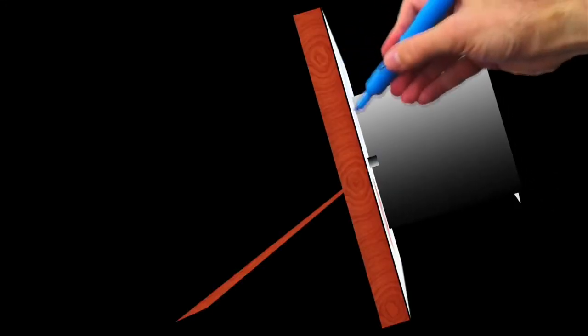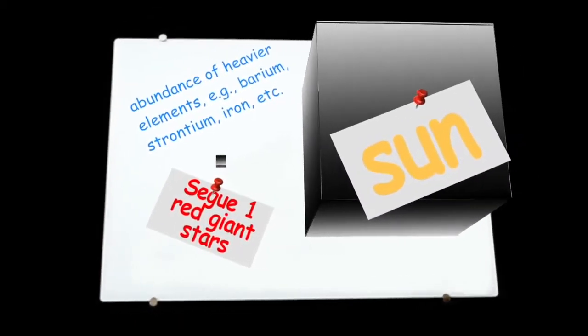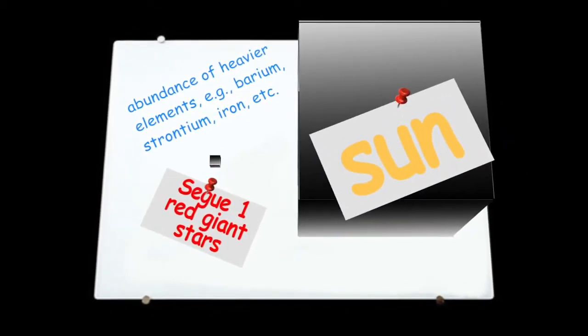Three of the seven red giant stars in Segway 1 are bright enough for scientists to measure the abundance of each chemical element. These red giants have heavy element abundances like barium, strontium and iron more than 3,000 times lower than that of the Sun.